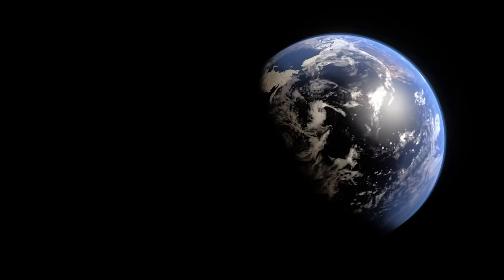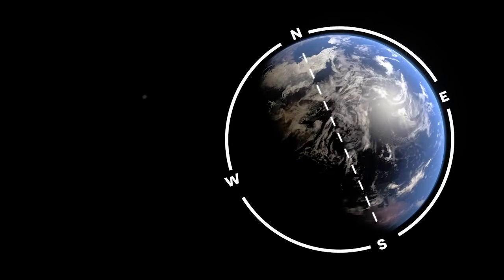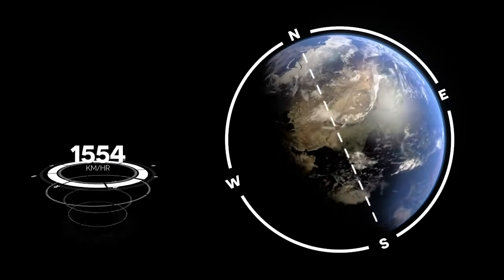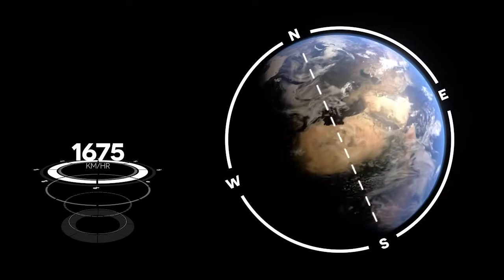So what do we do instead? ISRO scientists made smart use of the earth's motion to provide the spacecraft a natural boost. The earth rotates about its axis from west to east at a staggering speed of 1675 km per hour. So if we launch the rocket towards east it will get a big push from the earth's rotational motion.